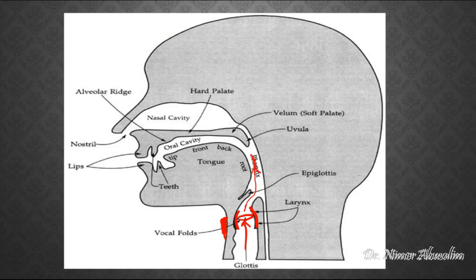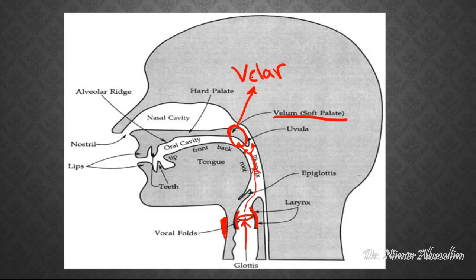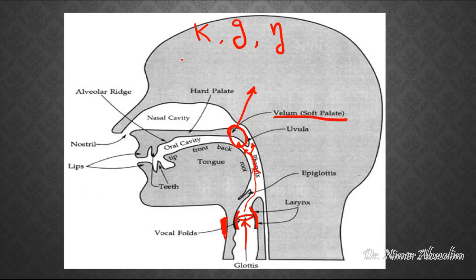Now the air can keep moving all the way up. It can either choose the path of going through the nasal cavity or the oral cavity. Sticking with the oral cavity, as the air moves up it could be modified by your velum, or your soft palate, somewhere around this area. If that's the case, then you produce a velar sound, and all other sounds are not velar. The only velar sounds in English are K, as in 'cat' or 'kite,' G, as in 'go,' and the ING sound, as in 'sing.'